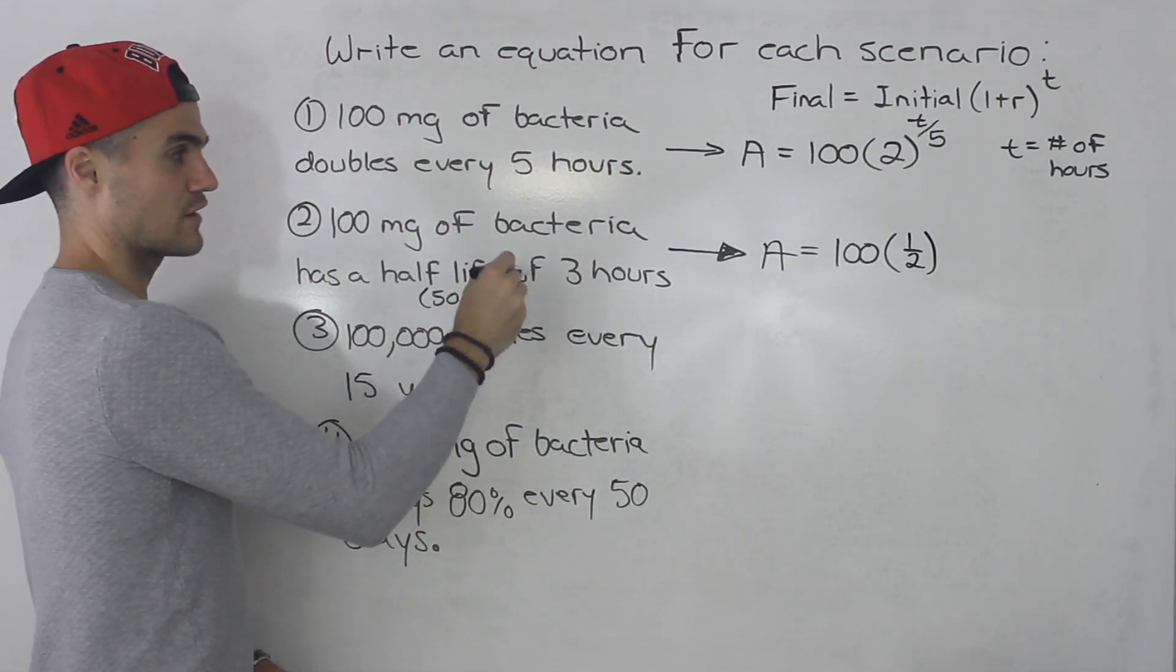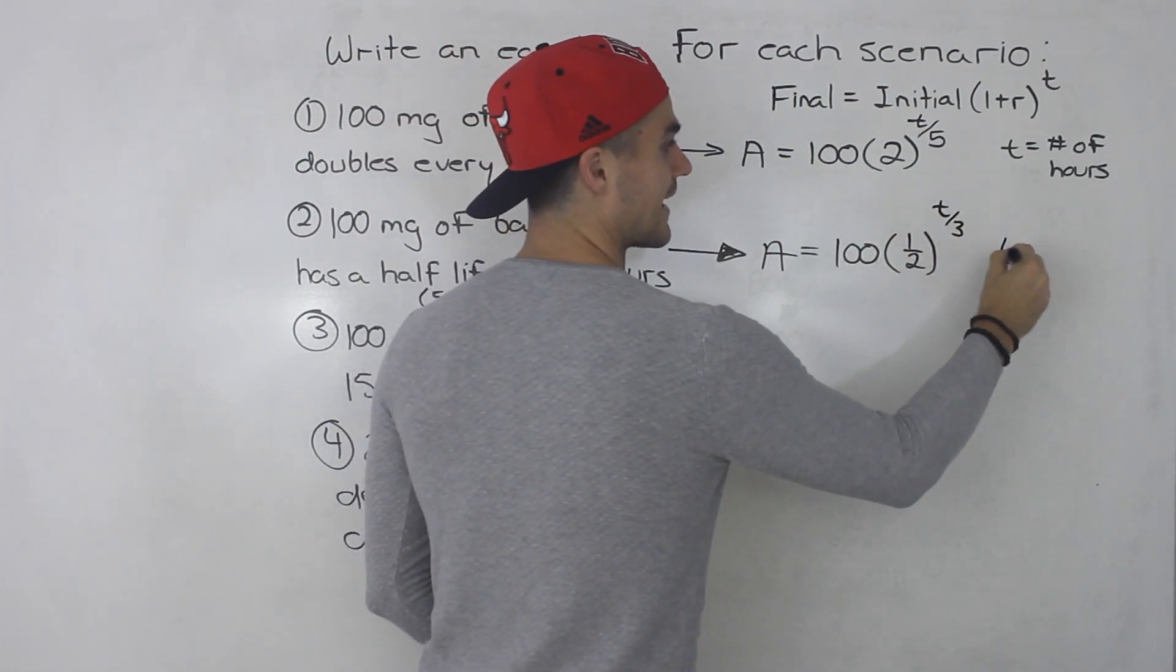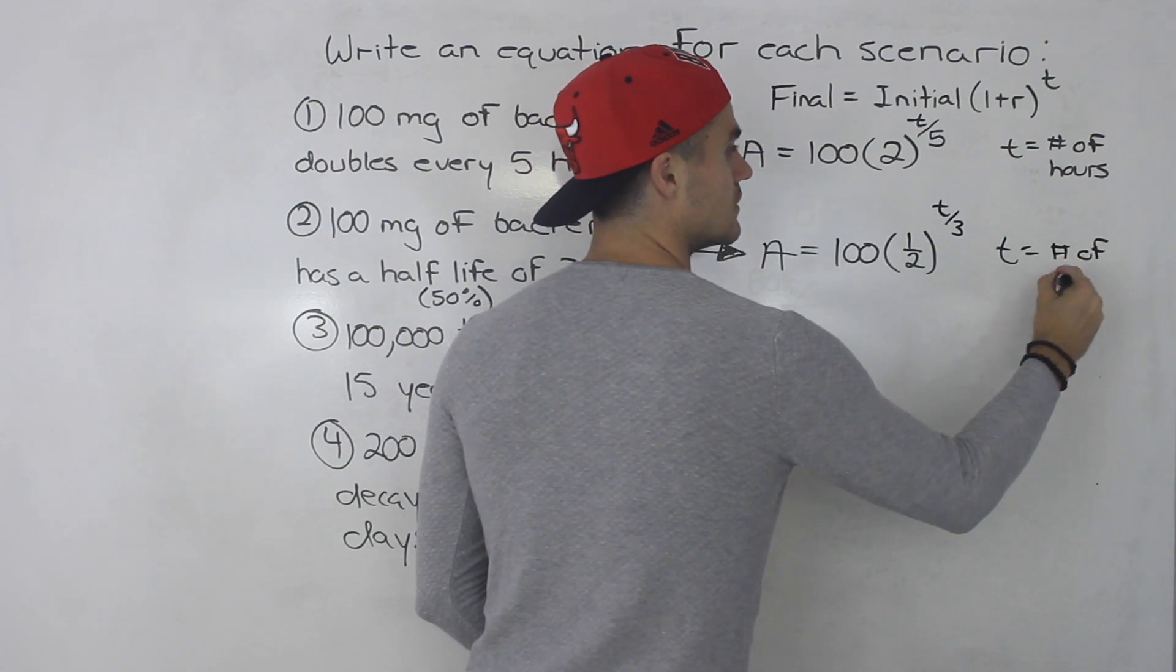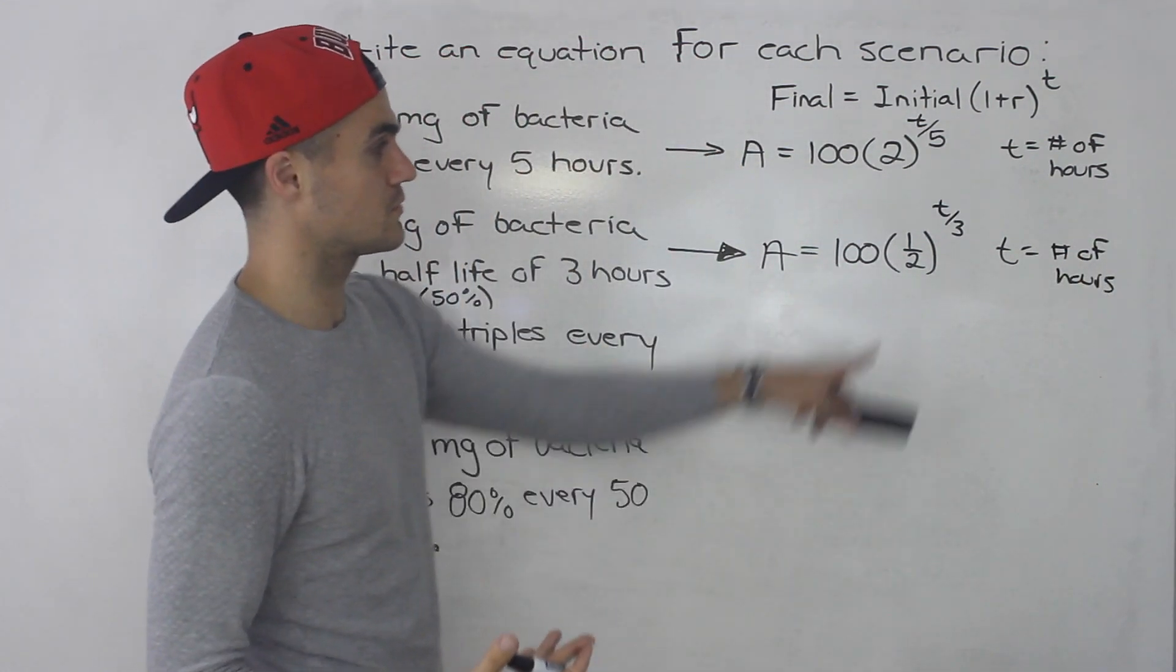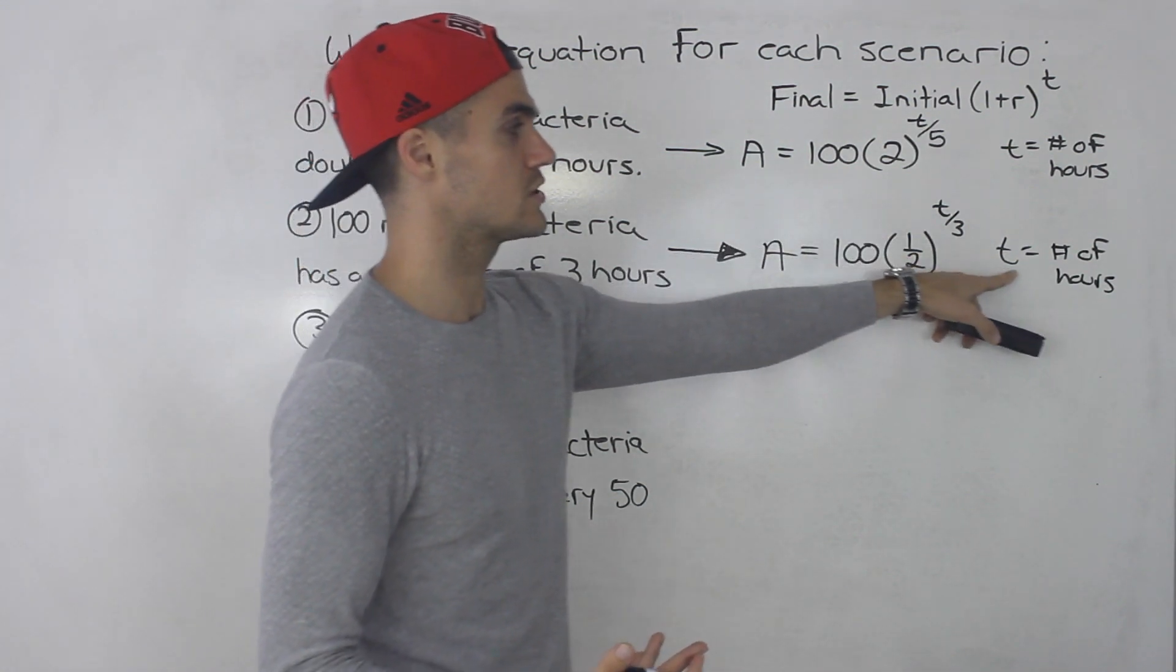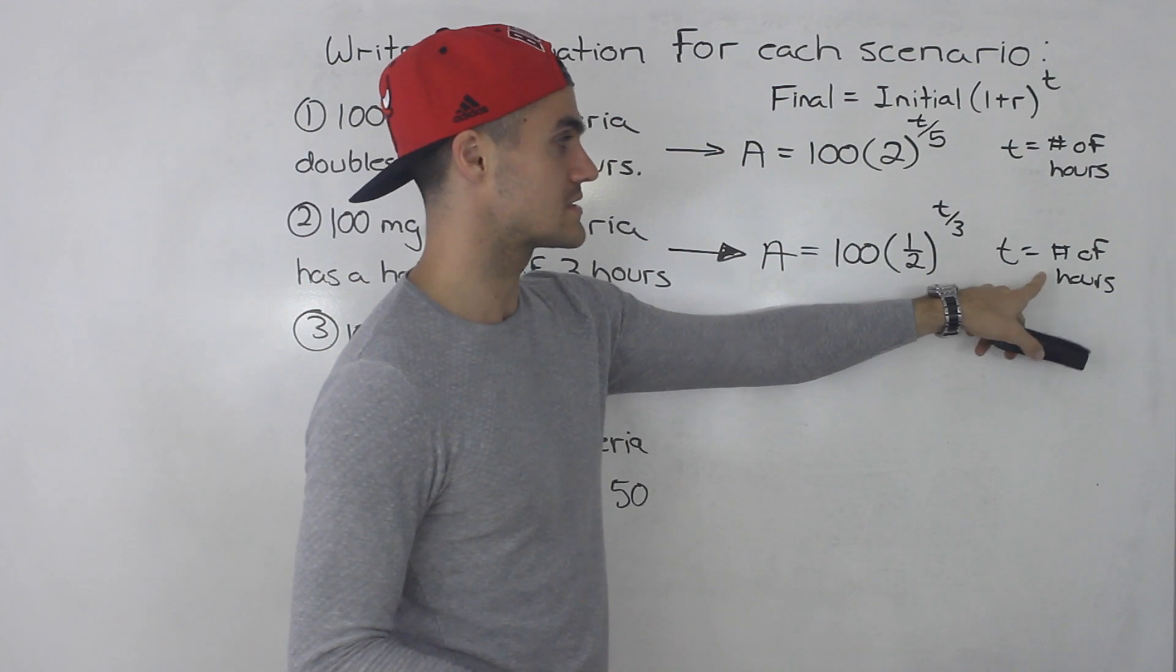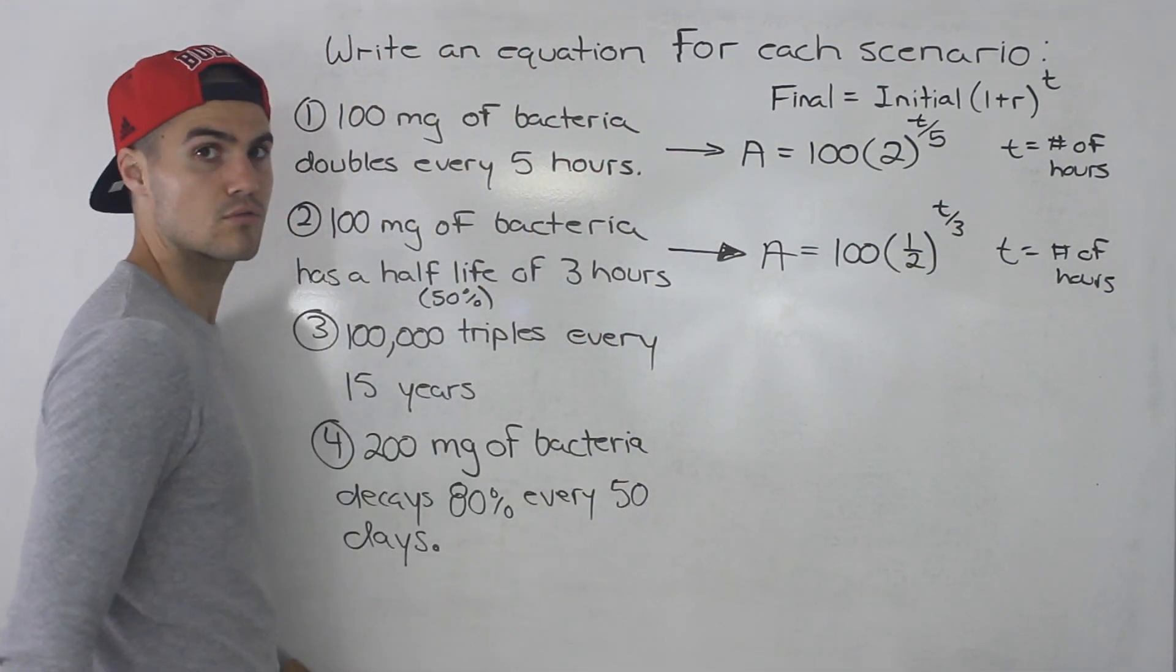And then it has a half-life every three hours. So we would put the t value over three. Again, if we let t equal the number of hours, if we let t be the number of three hour periods, we would just put an exponent t. But usually we're going to let t be whatever that unit of time is. It's the number of hours. So we've got to put it over three if the half-life is three hours.